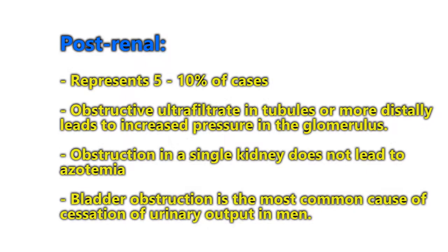The third type is post-renal, or obstructive nephropathy, representing only 5–10% of cases. Obstruction of ultrafiltrate in the tubules or more distally leads to increased pressure in the glomerulus, causing a decrease in GFR. Obstruction in a single kidney does not lead to azotemia — if just one kidney is blocked, the other maintains function. Bladder obstruction, think prostate, is the most common cause of cessation of urinary output in men.